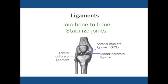Ligaments are bands of fibrous tissue that connect bones together at joints. Their function is to stabilize joints by preventing movement beyond the normal range of motion or along an undesired plane, which is important for preventing injury. This is an image of three important ligaments crossing the knee joint.